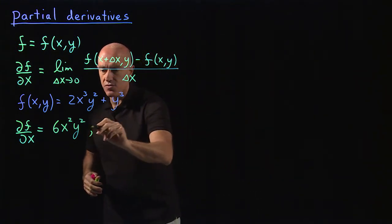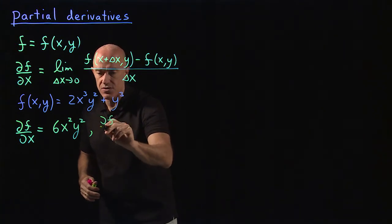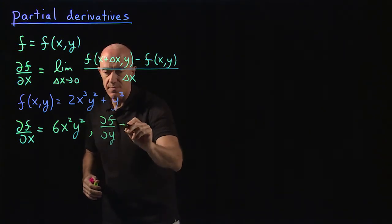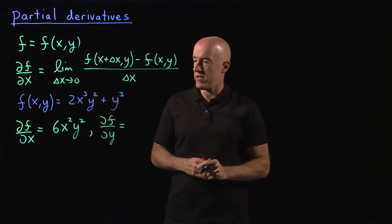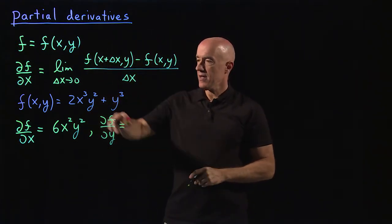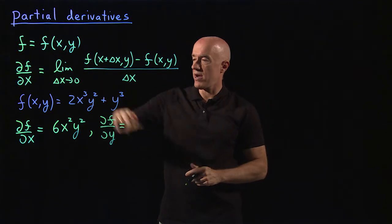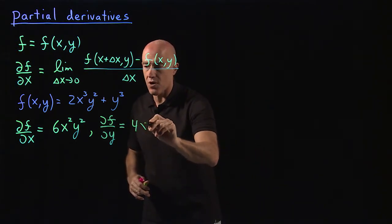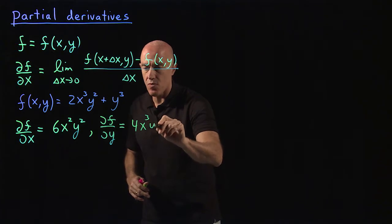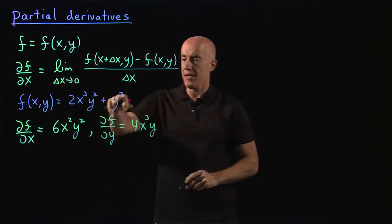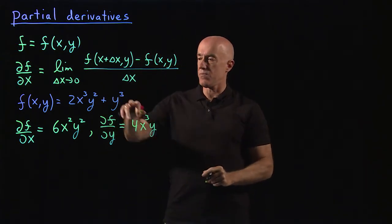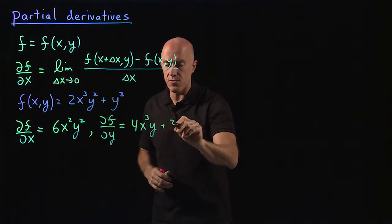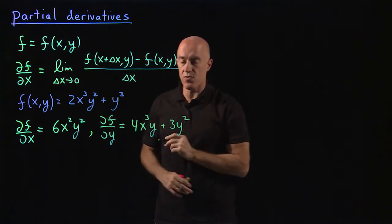The other derivative — the partial of f with respect to y — is the right way of saying it. You differentiate y squared to get 2y, so that term becomes 4x cubed y. And you differentiate y cubed to get 3y squared, so the result is 4x cubed y plus 3y squared.